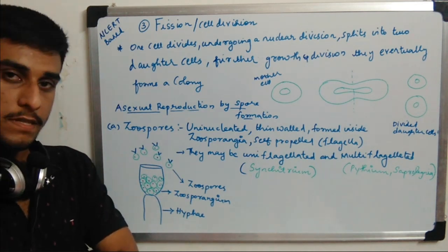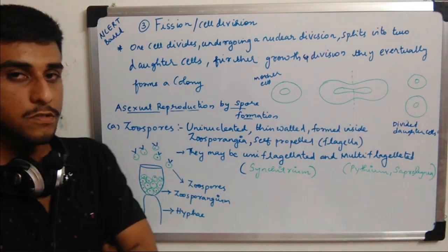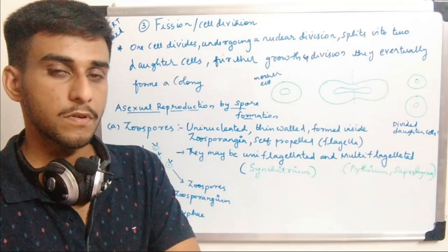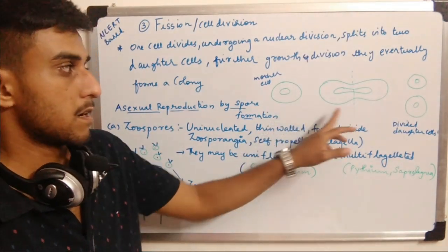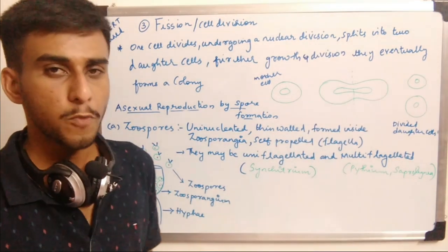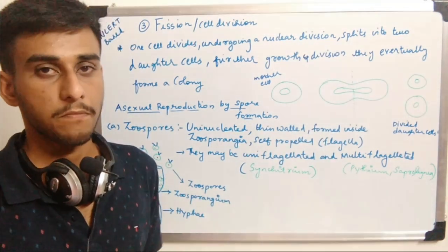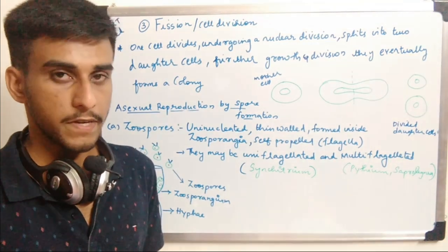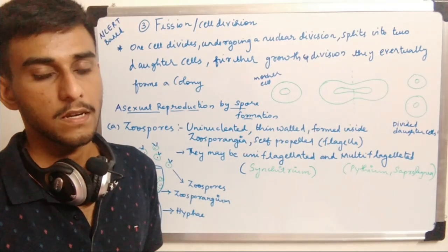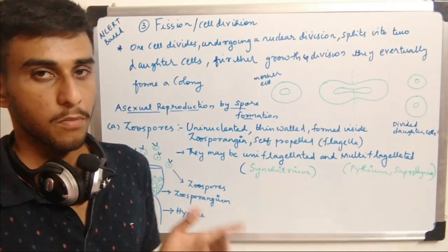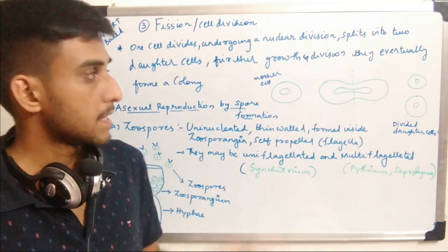A mother cell divides undergoing nuclear division, splitting into daughter cells. These daughter cells undergo further cell division forming a colony. Cell division is also a simplest method of vegetative reproduction. Binary fission is a subdivision in which a cell is equally divided into two halves, called daughter cells. Cell division starts with DNA replication.